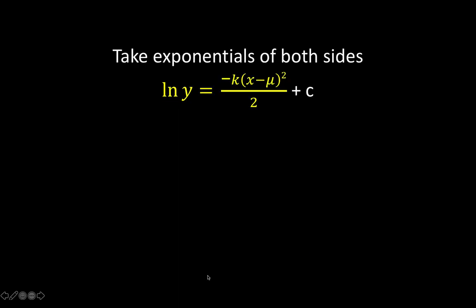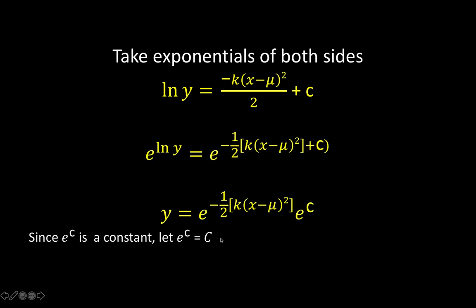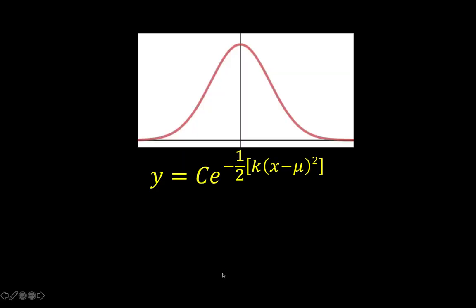To simplify further, we take the exponential of both sides. So we now have e raised to ln y equals e raised to this expression on the right side. Applying laws of exponents, we arrive at this expression. Since e raised to some constant is just another constant, we let e raised to small c equal capital C. By the commutative property, we now arrive at this equation for our normal curve.